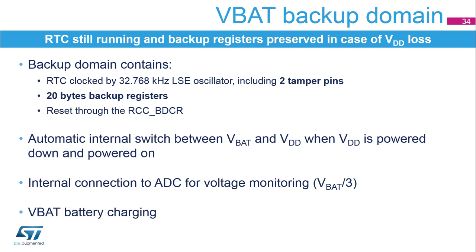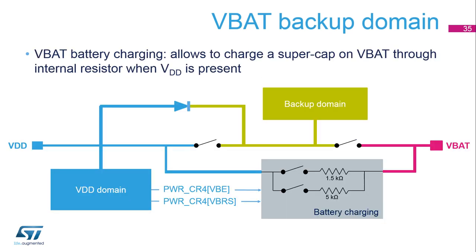When VBAT is present, the battery connected to VBAT can be charged from the VBAT supply. The battery charging feature allows charging a supercap connected to the VBAT pin through an internal resistor when VDD supply is present. The charging is enabled by software and is done either through a 5 kOhm or 1.5 kOhm resistor depending on software. Battery charging is automatically disabled in VBAT mode. PWRCR4VBE enables battery charging; PWRCR4VBRS selects the resistance value.